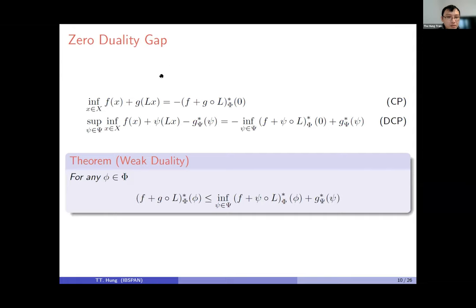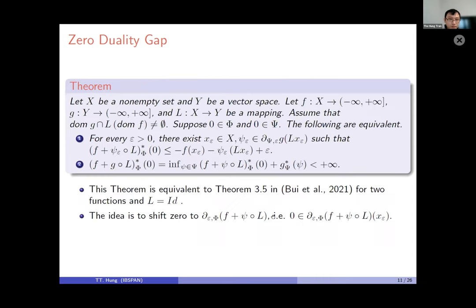Next we discuss zero duality gap. We first restate the primal and dual problems. We have weak duality: the primal value is greater than or equal to the dual value, because of the sign of minus psi. For the zero duality gap result: for every epsilon, if there exists psi in the subdifferential of g∘l at x, such that zero belongs to the subdifferential of f plus psi∘l, then we have zero duality gap, and these two statements are equivalent.